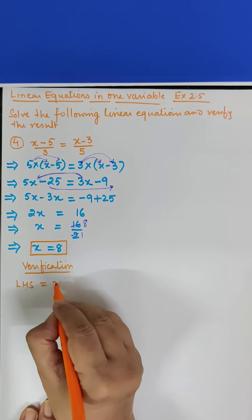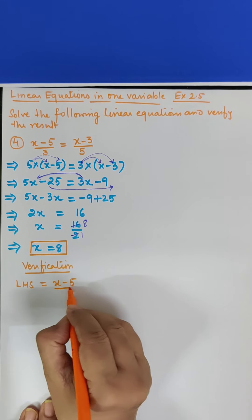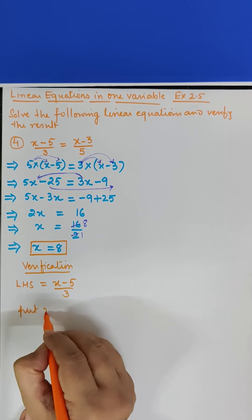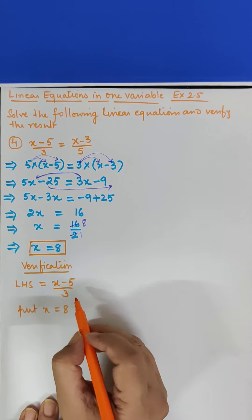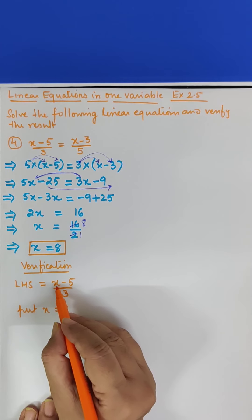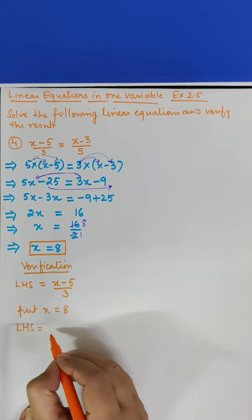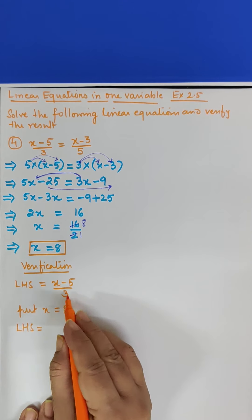Pehle LHS. LHS kya hai hamara x minus 5 upon 3. So we put x is equal to 8. X jahan likha hai, wahan 8 likhenge, to yahan 8 ho jayega to LHS is equal to what. 8 minus 5 upon 3.